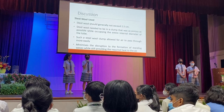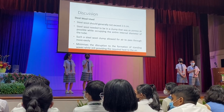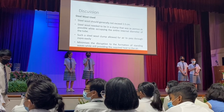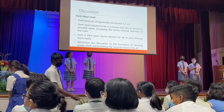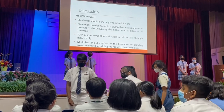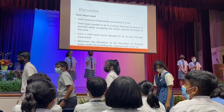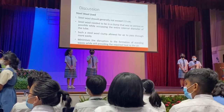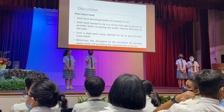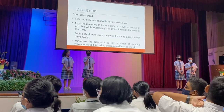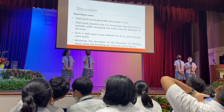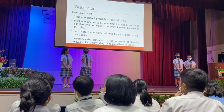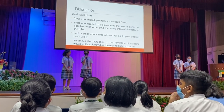The steel wool used for our experiment also should not exceed 2.5 cm for the test tube diameter. The steel wool needed to be as porous as possible and yet occupy the full diameter of the test tube. This is so that the air passes through with minimal leak and minimizes the disruption caused to the production of a standing wave, while still transferring heat to the air.